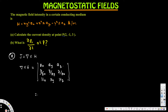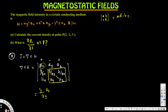We use the determinant method for the cross product, with the plus-minus-plus sign pattern. For the ax component, we eliminate its row and column, leaving a 2×2 matrix. Using the ad minus bc rule, we get: partial derivative of Hz with respect to y, minus partial derivative of Hy with respect to z, in the ax component.